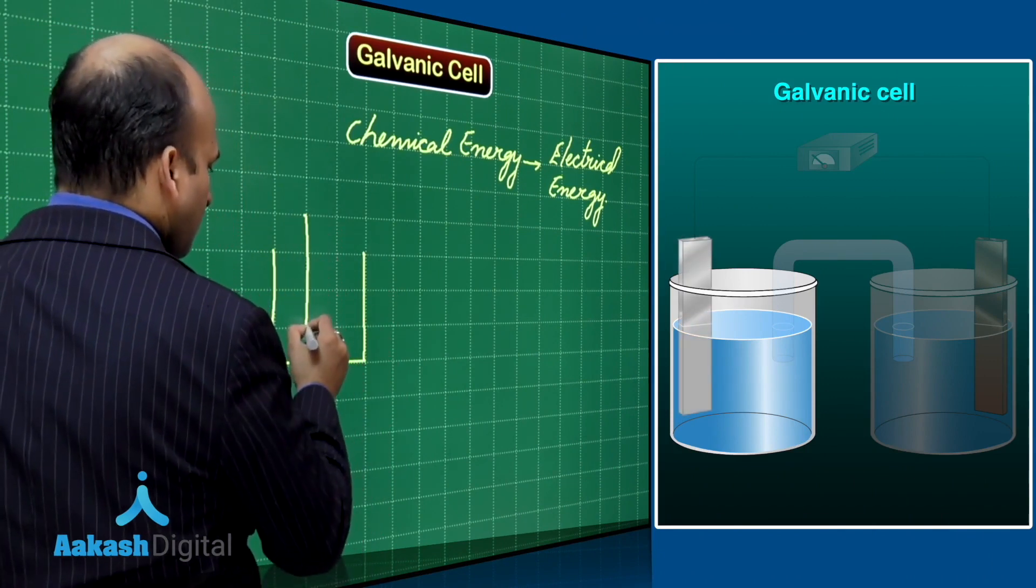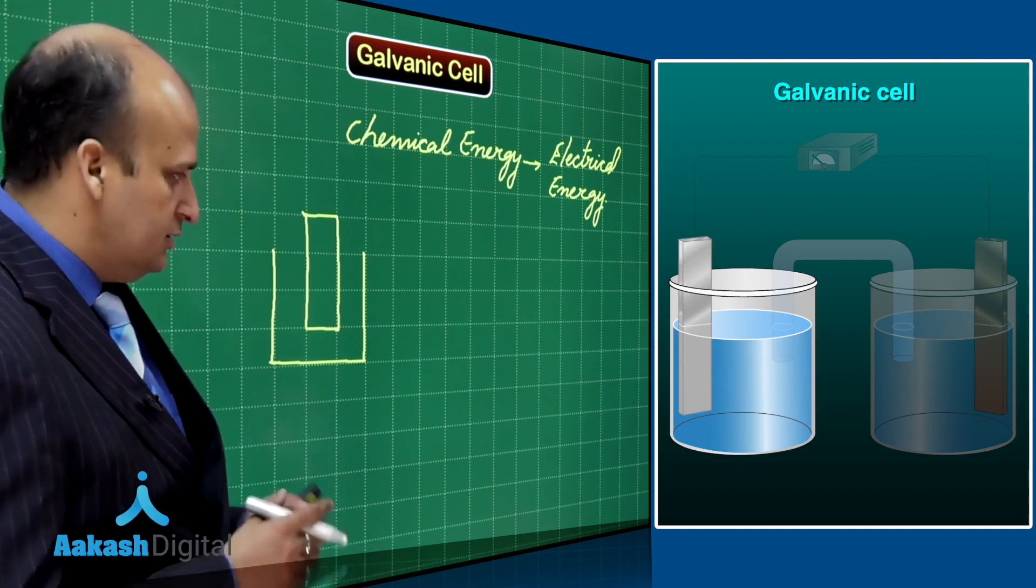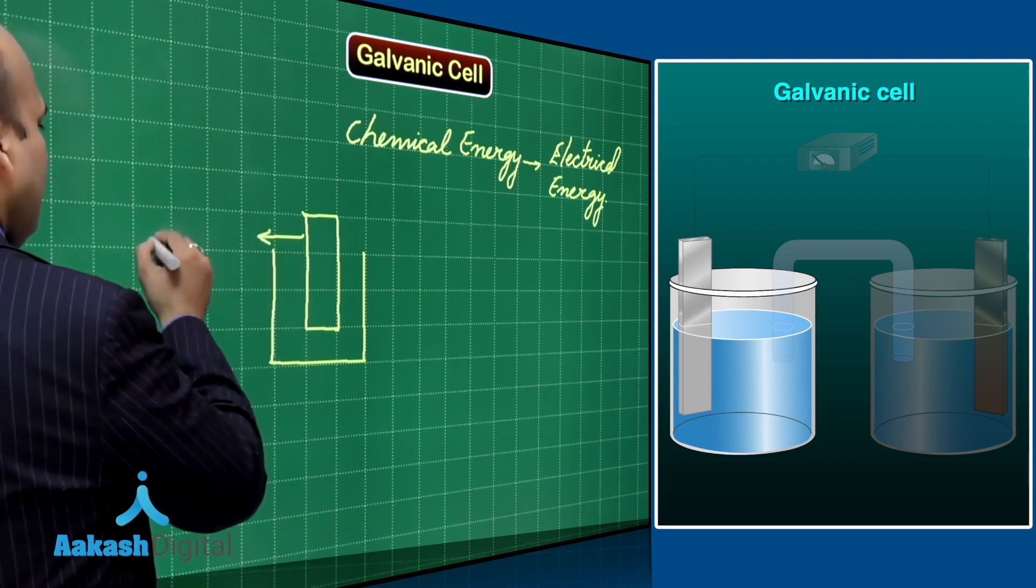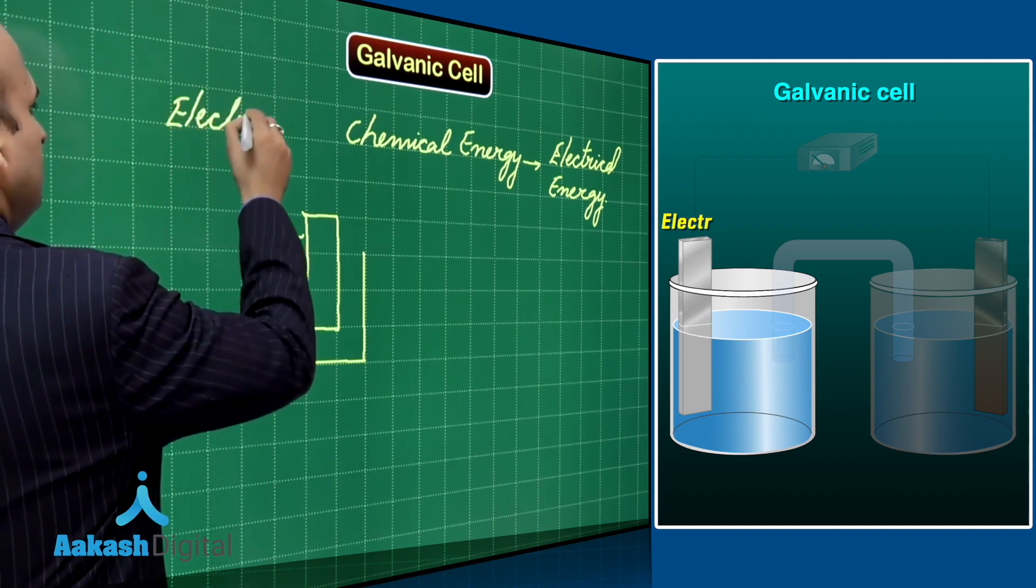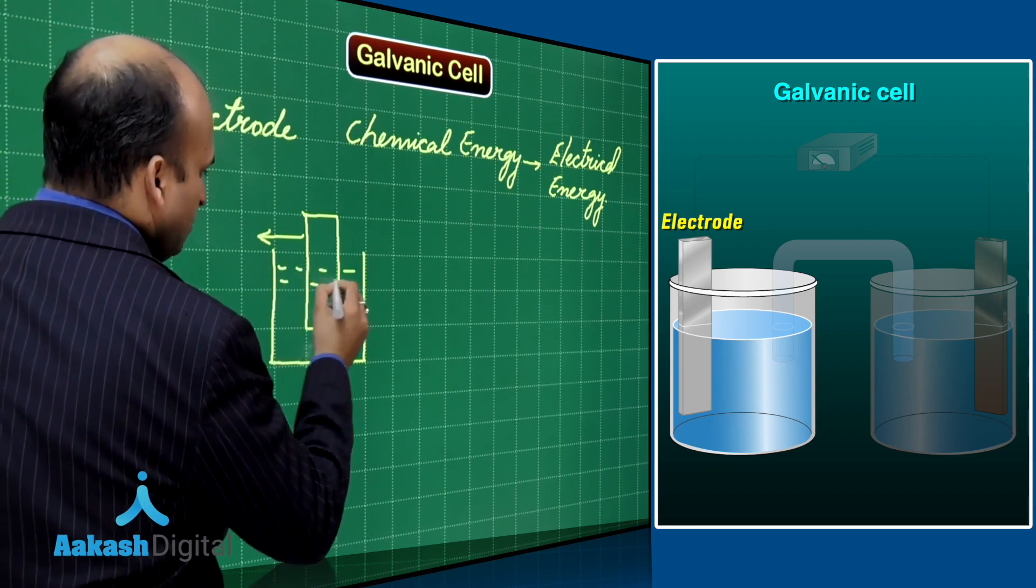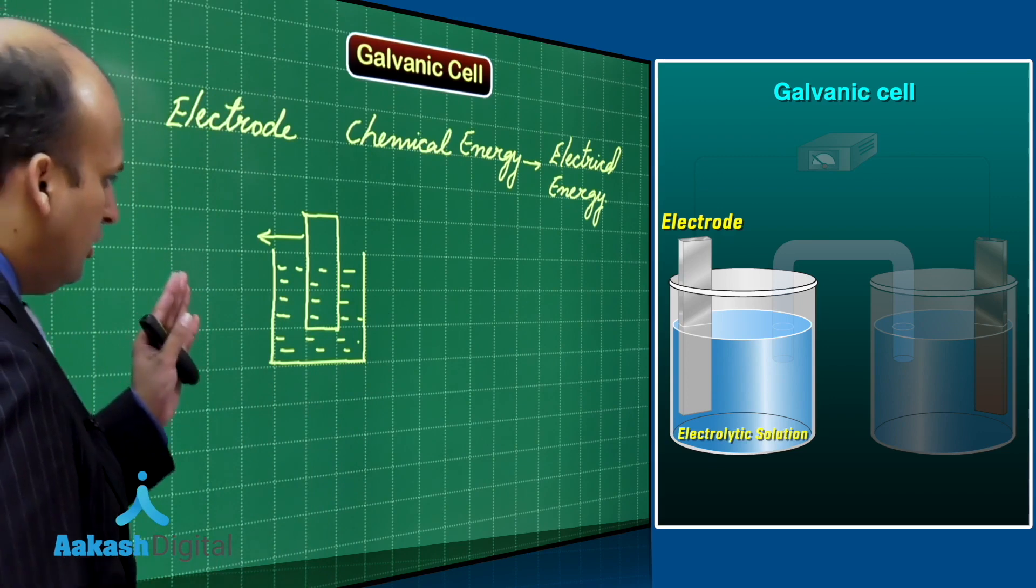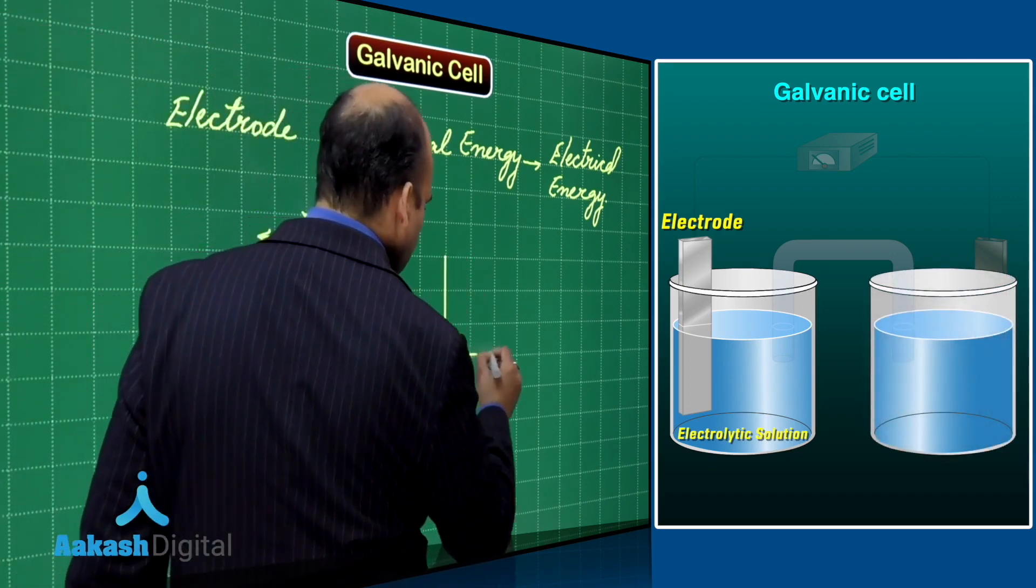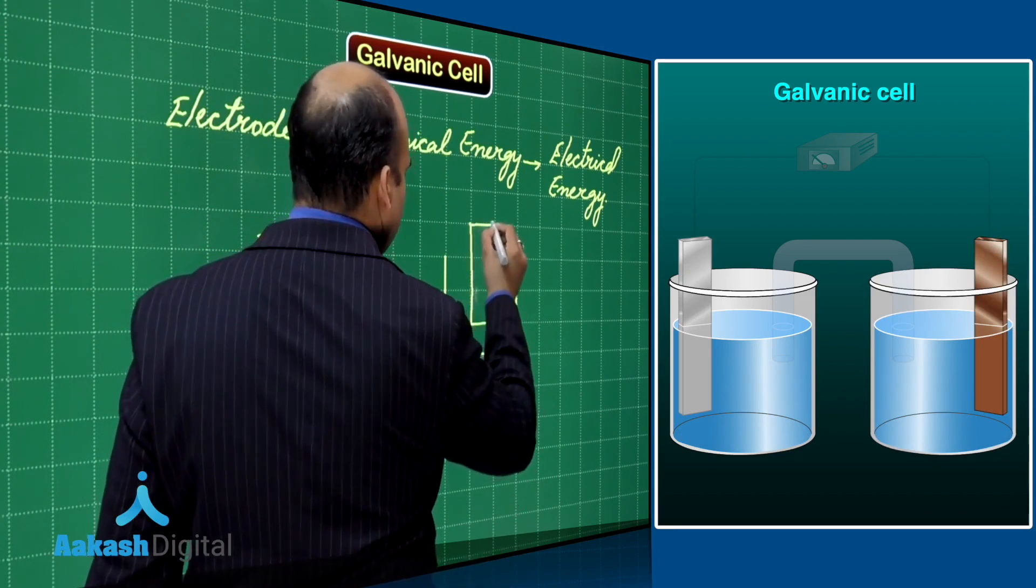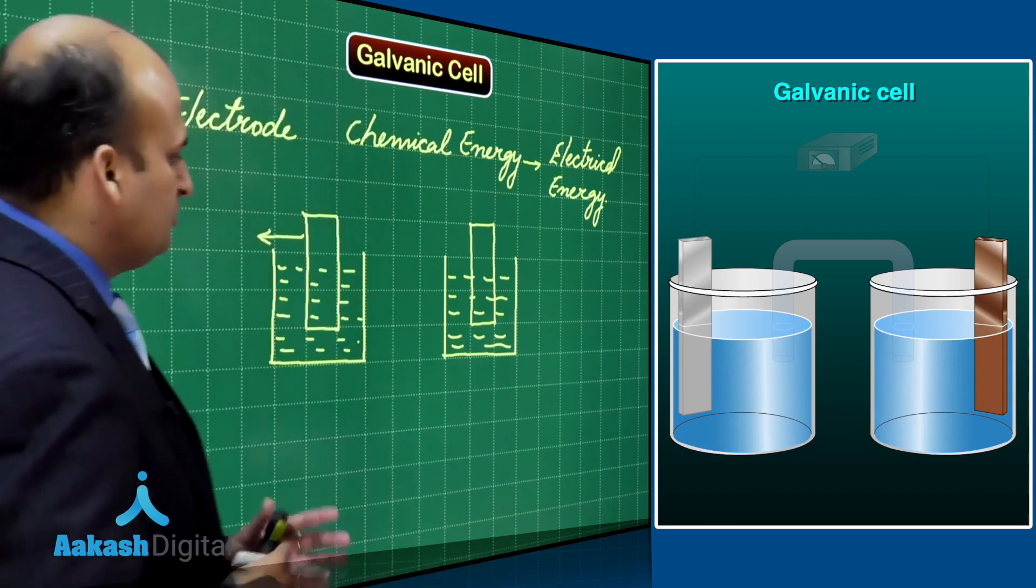First we will take a metallic rod, which is dipped in a solution. Now, I will explain what is this rod, what is the solution. This rod which is carrying the electric current is termed as electrode. And the solution over here in which this rod is dipped is referred as the electrolytic solution. Now, this rod is connected to another rod.